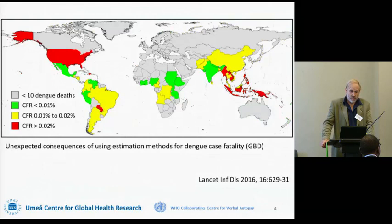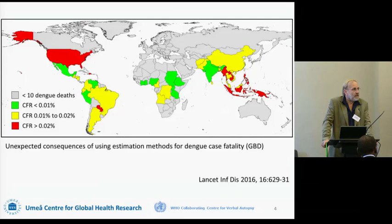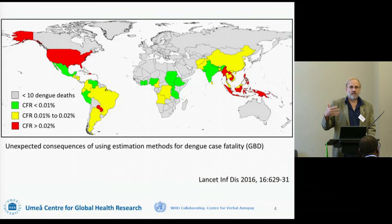Another example of how you can run into trouble: this is dengue case fatality, again from Global Burden of Disease work. They ran two models for dengue — one estimating the number of dengue deaths and the other estimating the number of dengue cases. Being slightly devious, I decided to divide one by the other to work out the case fatality rates. The highest case fatality rate in the world was for the United States, by far. I don't really believe that — it's about how you count. But it does show some of the potential pitfalls of not having the data you would wish to have and the dangers of over-extrapolating.